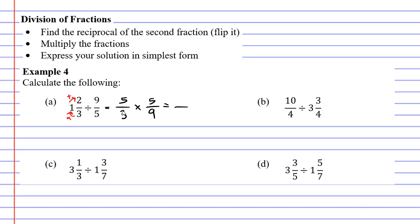Let's multiply these now. Multiplying the top two, 5 times 5 is 25. Multiplying the bottom two, 3 times 9 is 27. This is one where we cannot simplify it.